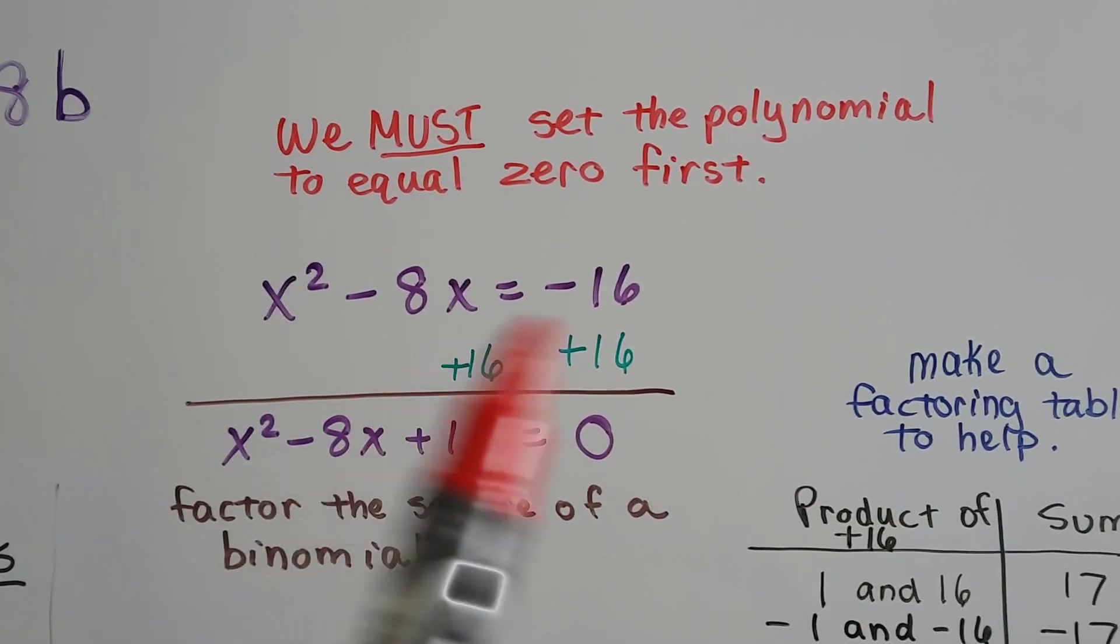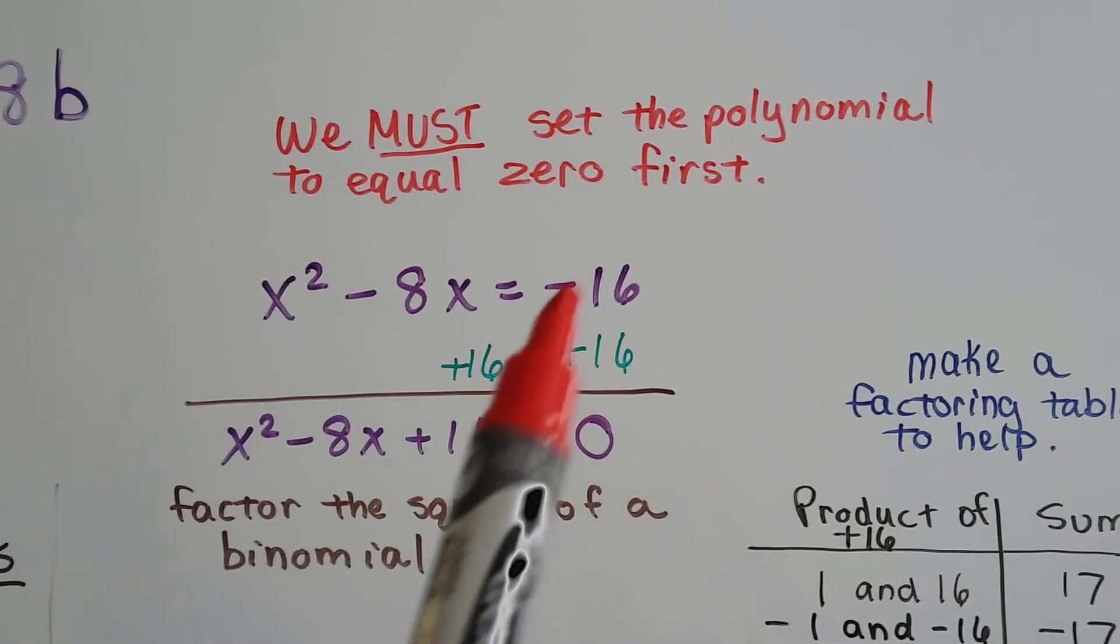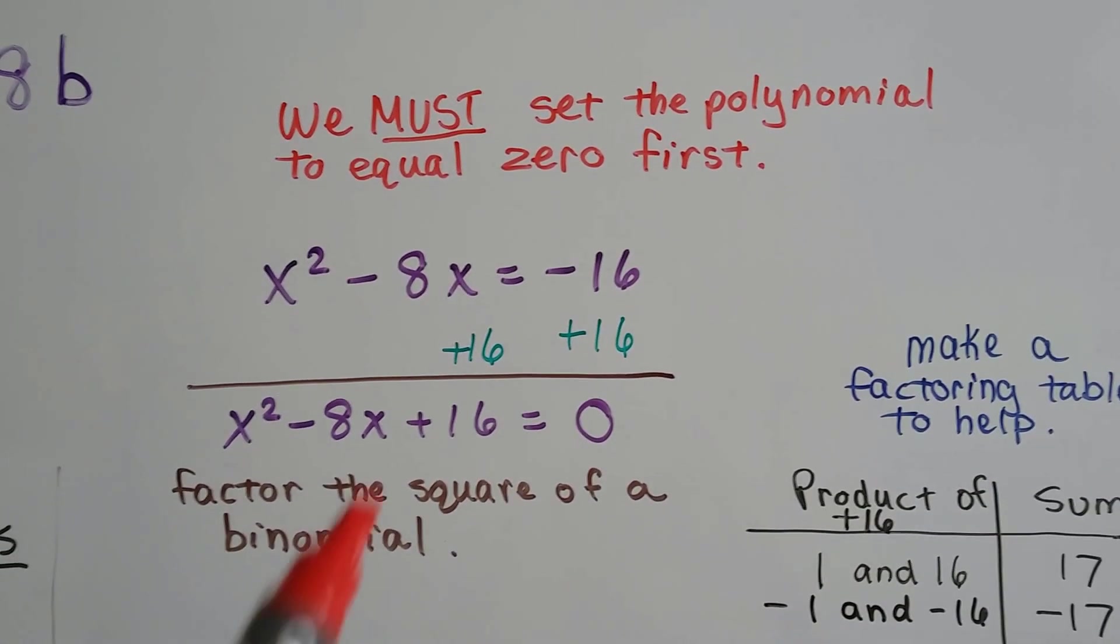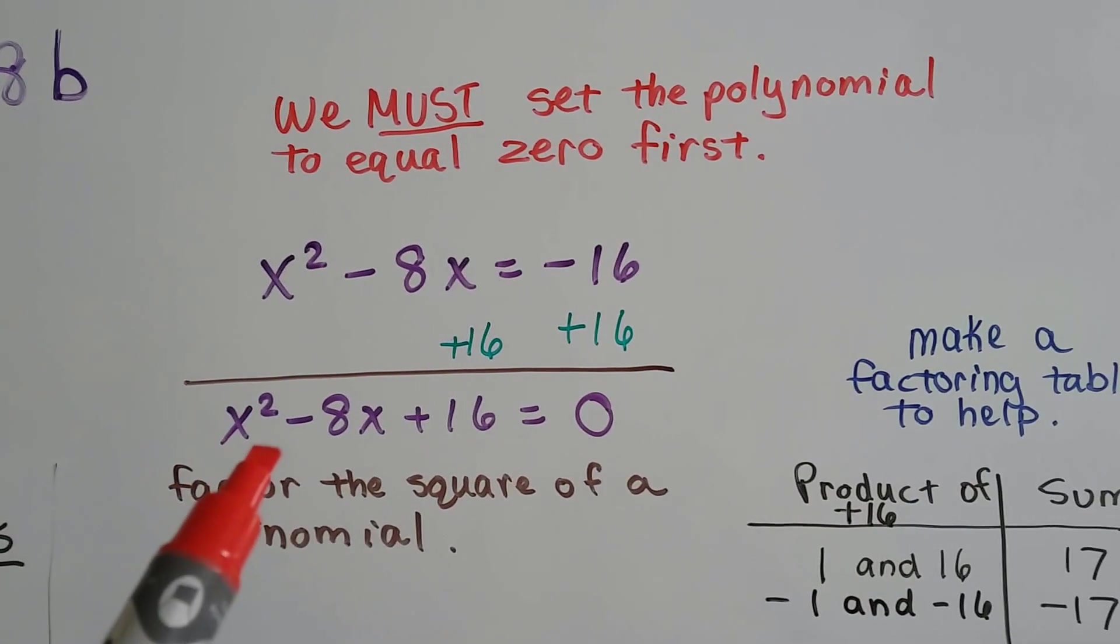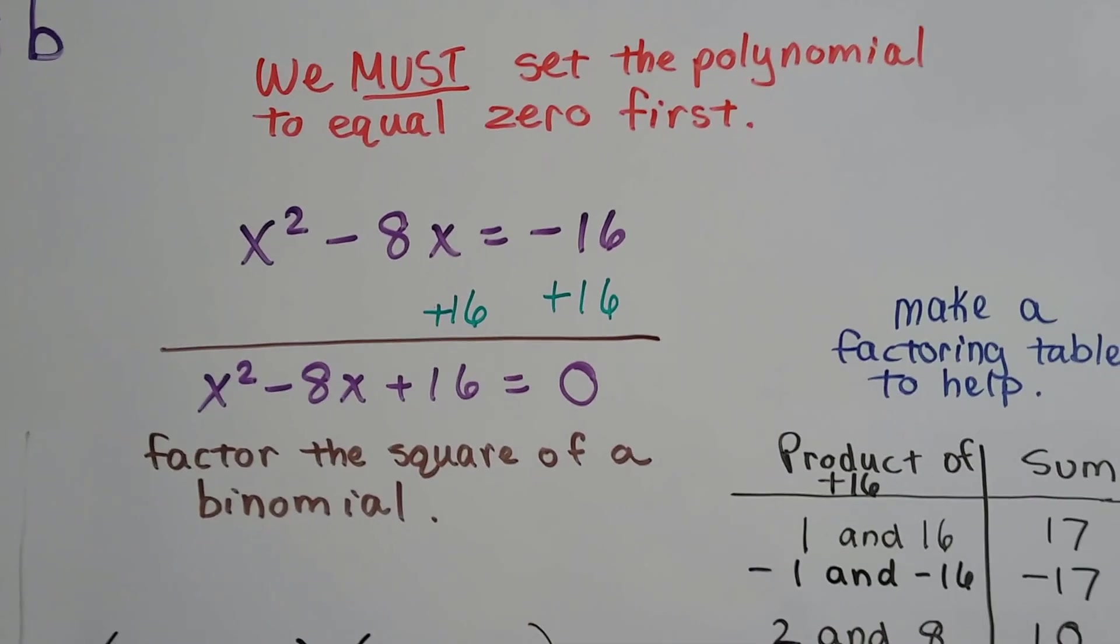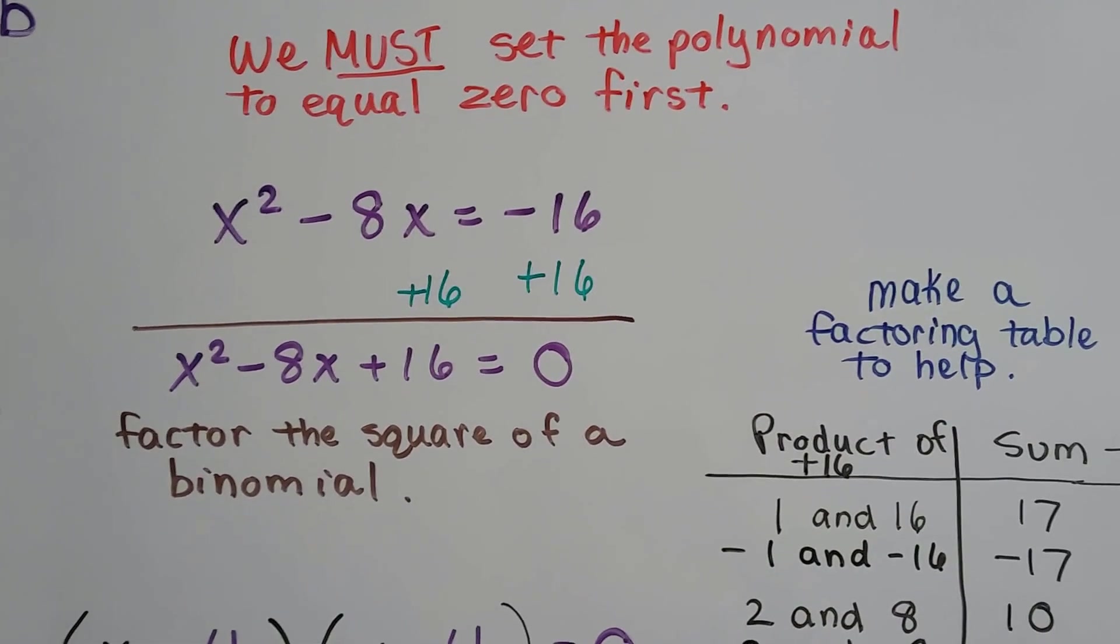So by adding 16 to each side, we create a zero pair here and eliminate that negative 16, and we throw a 16 onto this side. So now we've got x squared minus 8x plus 16, and it equals zero. So we've got the polynomial set to zero.